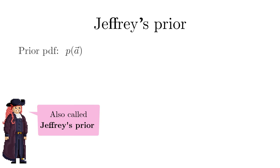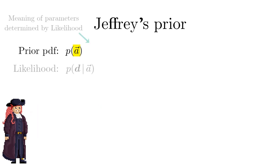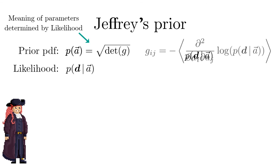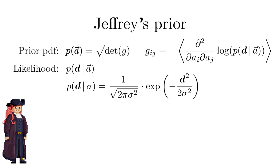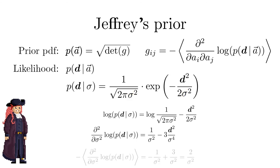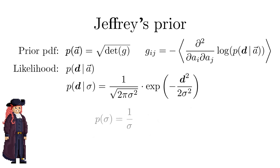The uninformative prior PDF of parameters a depends on the meaning of the parameters. In many cases these are uniquely determined by the likelihood function. A PDF that is invariant against reparameterization is given by p of a equal to the determinant of g. A typical example of a scale variable is the standard deviation sigma entering a Gaussian likelihood. Applying Jeffrey's prior yields p of sigma equal to 1 over sigma, the same result as obtained by Jaynes' approach.